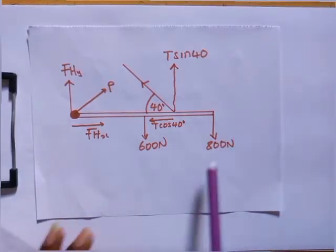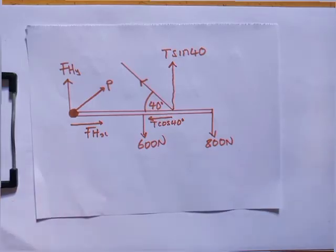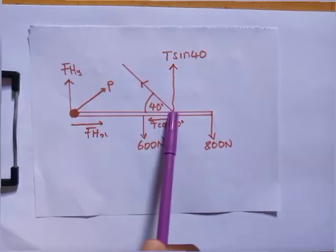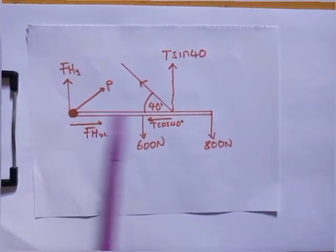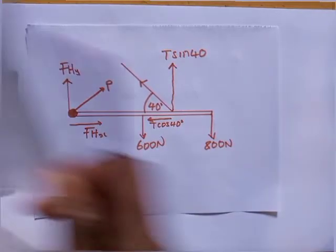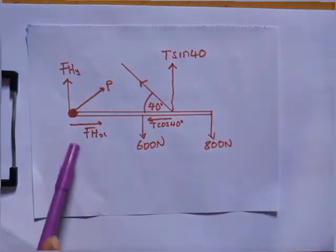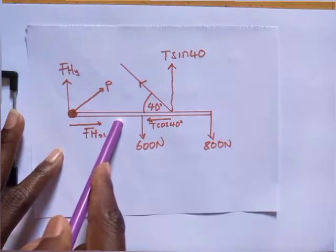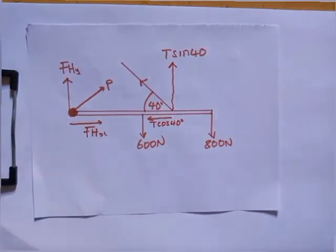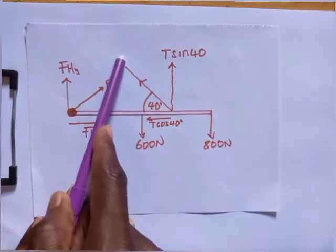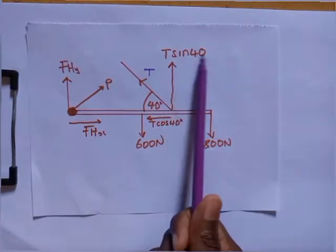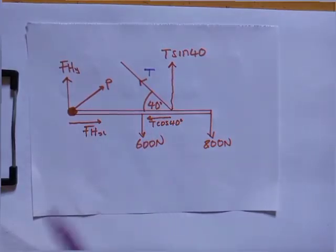We have the 800 N weight at the end and the 600 N beam weight in the middle, both pointing downward. The distance from the hinge to the end of the beam is l. The distance from the hinge to where the rope is tied is 3l/4. The weight of the beam acts at l/2 from the hinge, since it acts at the center of the uniform beam.